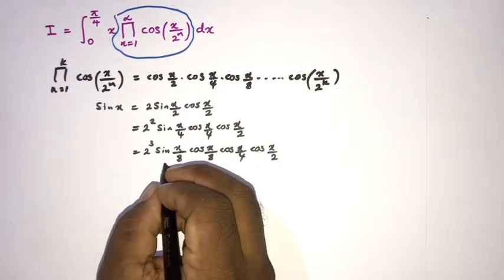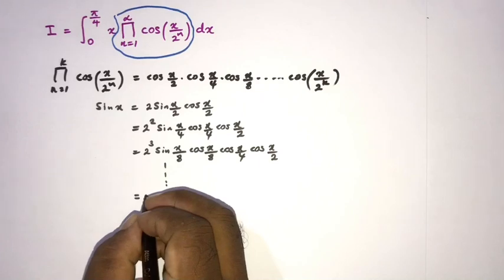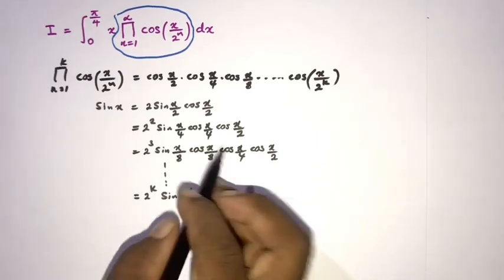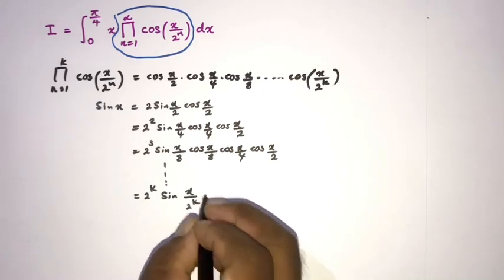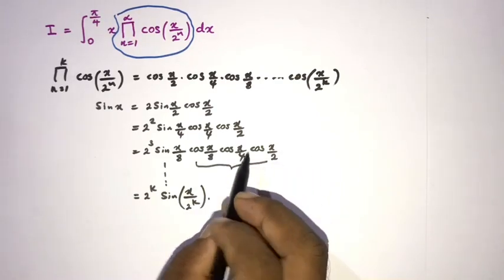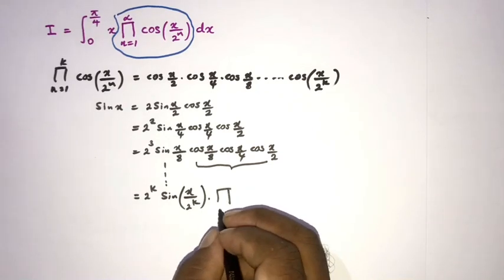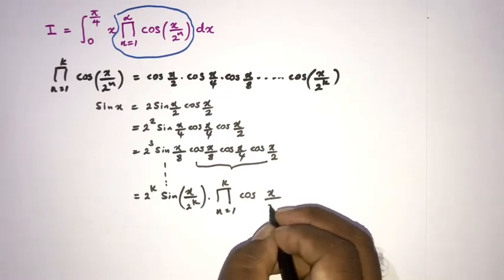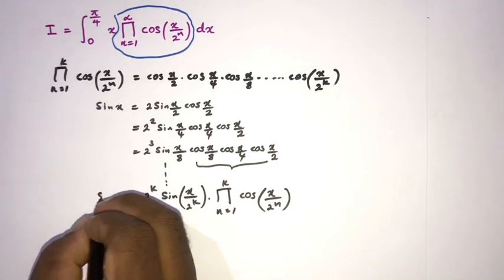Continuing this pattern to the k-th step, we can write: 2 raised to the k times sine of x over 2^k, times the product from n equals 1 to k of cosine of x over 2^n. So sine of x equals 2^k times sine of x over 2^k times that product.